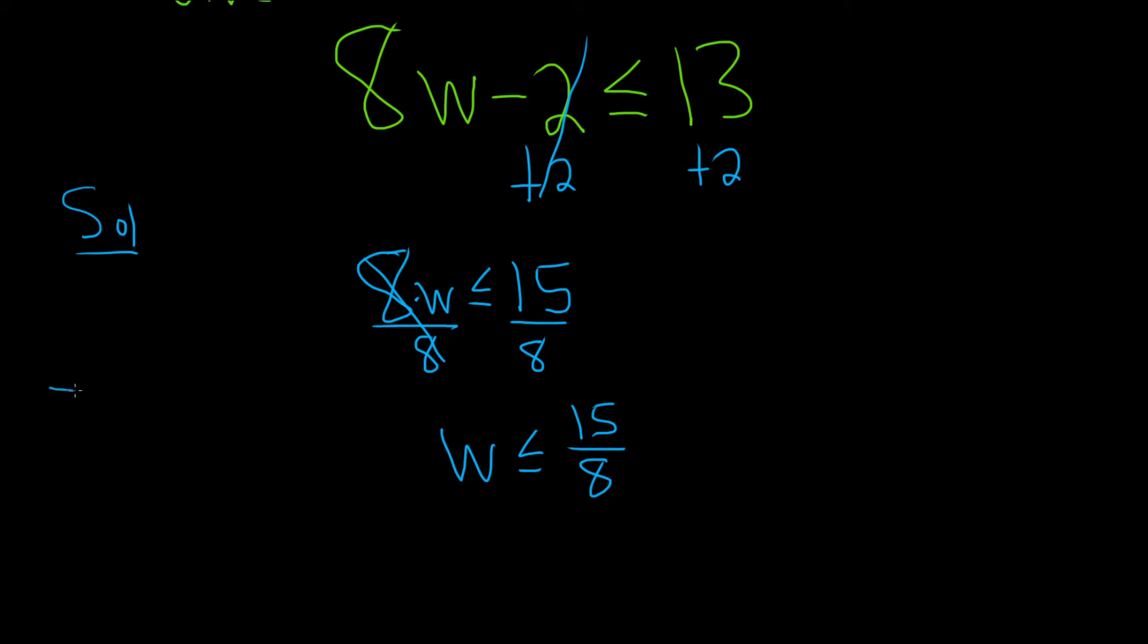So now we can draw a picture. So here is 15 over 8. Just put it anywhere on the number line. And it's all of the w's that are less than or equal to 15 over 8. So all the numbers less than or over here. And equal to means we also put a dot here where the 15 over 8 is.